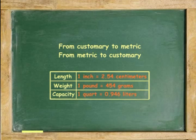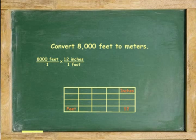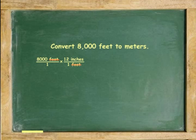For example, convert 8,000 feet to meters. Because the conversion table uses inches for length, convert 8,000 feet to inches first. 8,000 feet over 1 times 12 inches over 1 foot. Cancel feet. Multiply 8,000 times 12 and you get 96,000 inches.